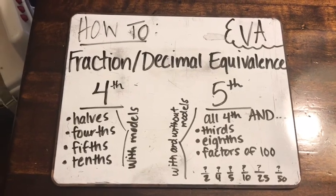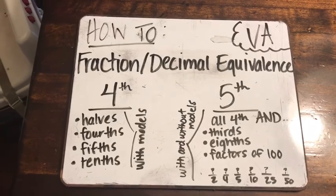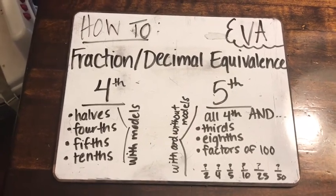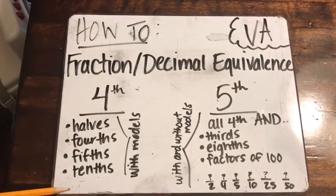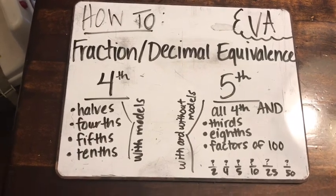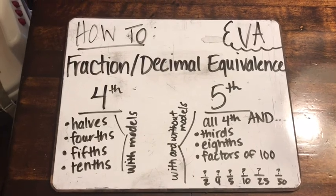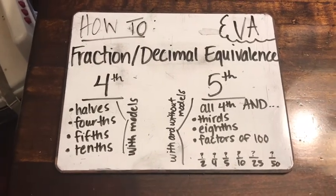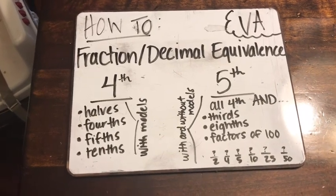I'm a math coach in Virginia. In fourth grade, students are expected to understand fraction-decimal equivalence for halves, fourths, fifths, and tenths with models. In fifth grade, they are expected to remember all of those and then add in thirds, eighths, and factors of 100 — so halves, fourths, fifths, tenths, 25ths, and 50ths would also be factors of 100. I'm going to start with the fourth-grade ones and show you a way to teach halves, fourths, fifths, and tenths.